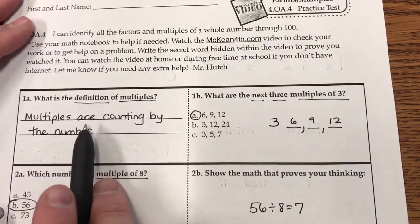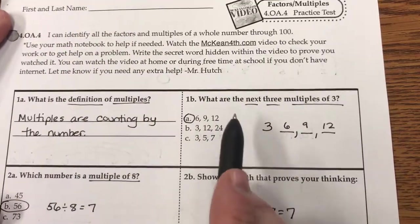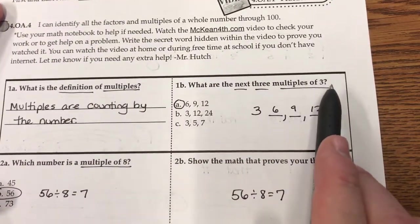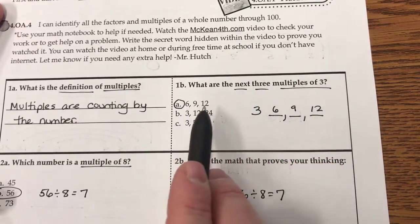Obviously, definition of multiples, multiples are counting by the number. So you just write that, what we practice. What are the next three multiples of 3? You can see I just wrote this to help, but 3, then 6, 9, 12.